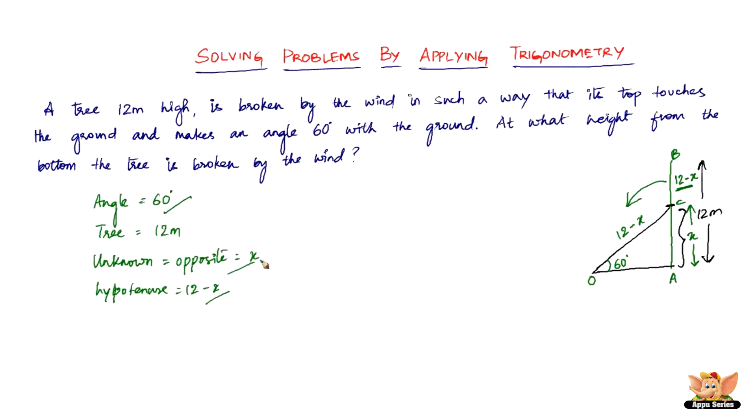So the things that are involved here is the angle and the opposite and the hypotenuse. So the first thing that should come to your mind is sine, out of sine, cos and tan. Now we've got sine theta straight away here. Sine theta is nothing but opposite by hypotenuse. So sine theta is 60 degrees. So we've got sine 60 here, which is equal to the opposite is X and then the hypotenuse is 12 minus X. So sine 60 as we know is root 3 by 2. So root 3 by 2 equals X by 12 minus X.